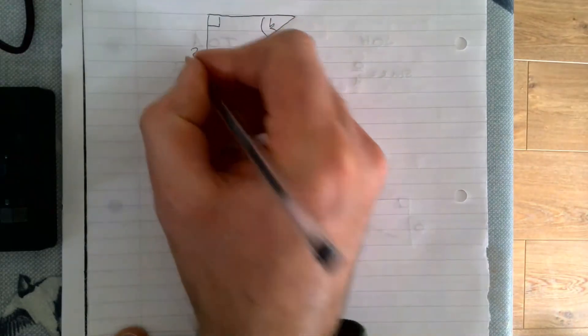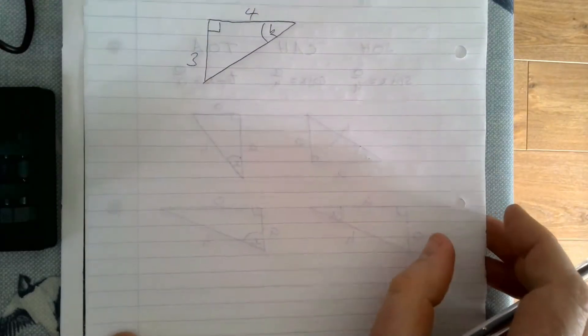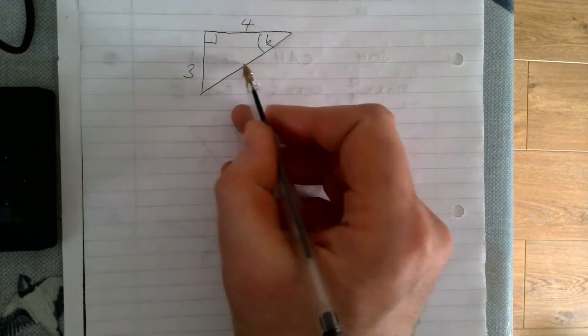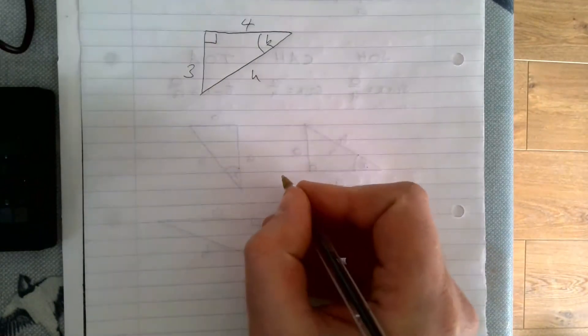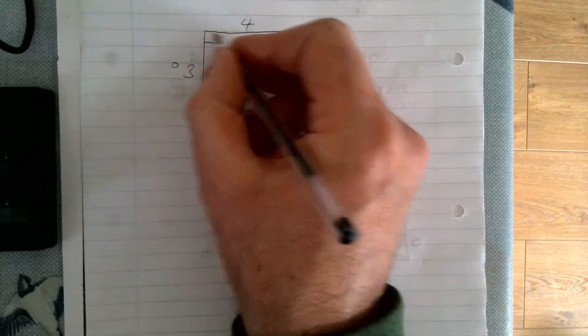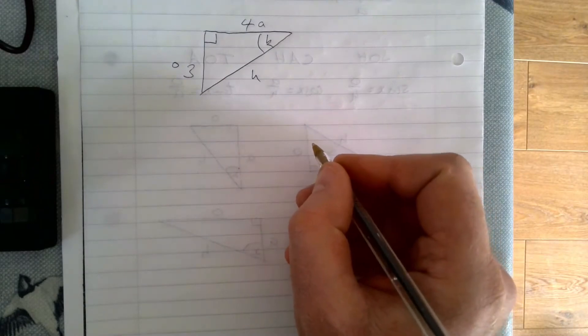Our first move as ever is to label our sides. The one opposite the right angle is H, the one opposite our angle is O, and the one beside our angle or adjacent is A. We then look and see which two we have.